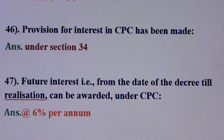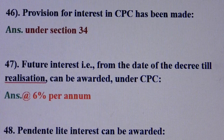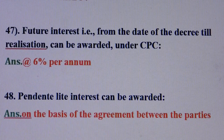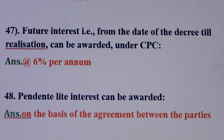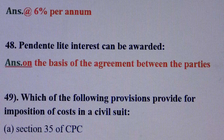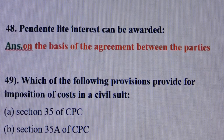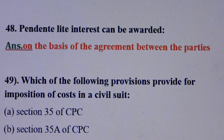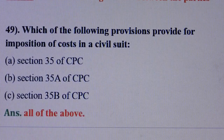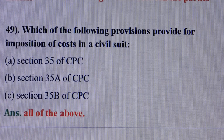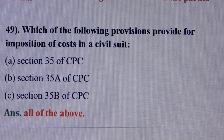Question number 46: Provisions for interest in CPC has been made — answer is: under section 34. Question number 47: Future interest, i.e., from the date of the decree till realization, can be awarded under CPC — answer is: at 6% per annum. Question number 48: Pendente lite interest can be awarded — answer is: on the basis of the agreement between the parties. Question number 49: Which of the following provisions provide for imposition of cost in a civil suit? Answer is: all of the above. That means: Option A — section 35 of CPC; Option B — section 35A of CPC; Option C — section 35B of CPC.